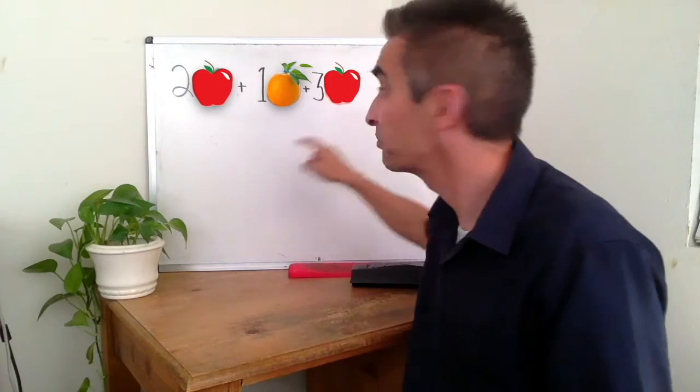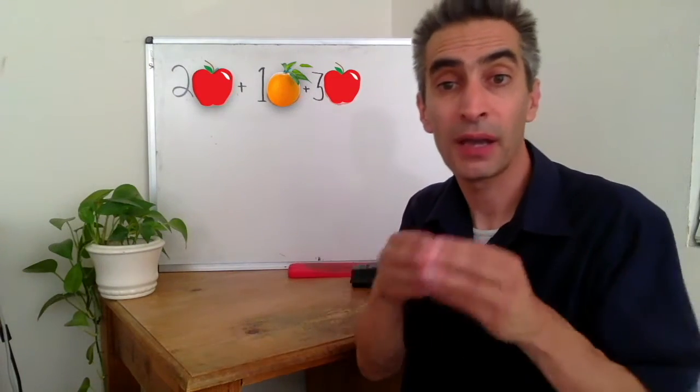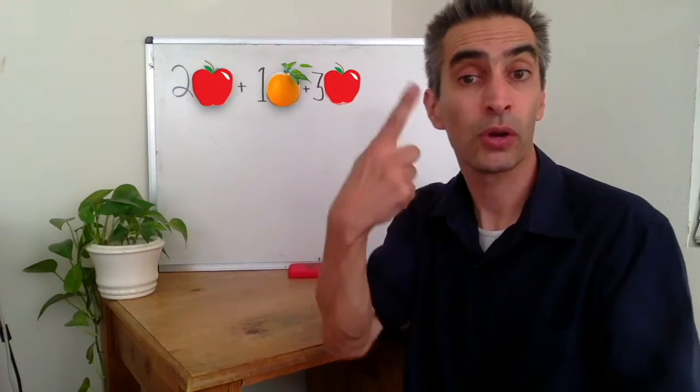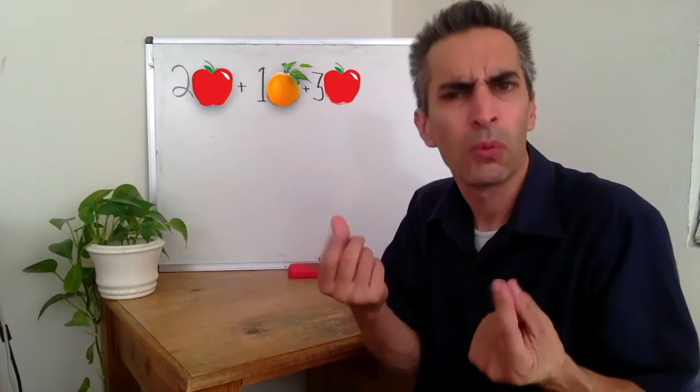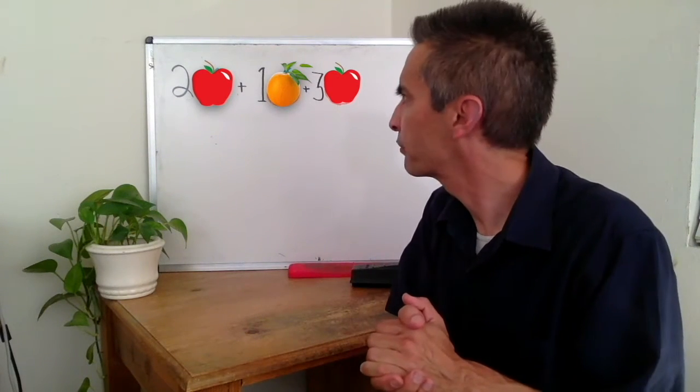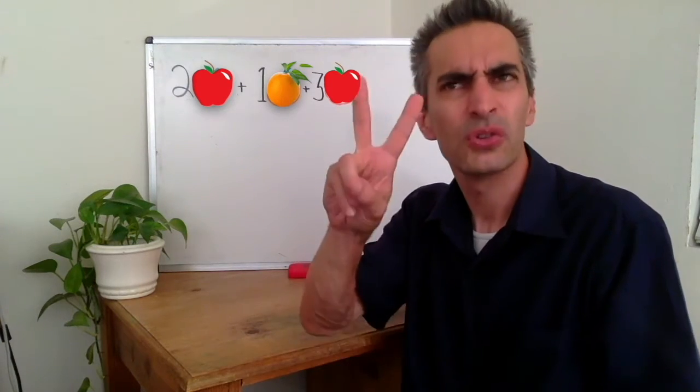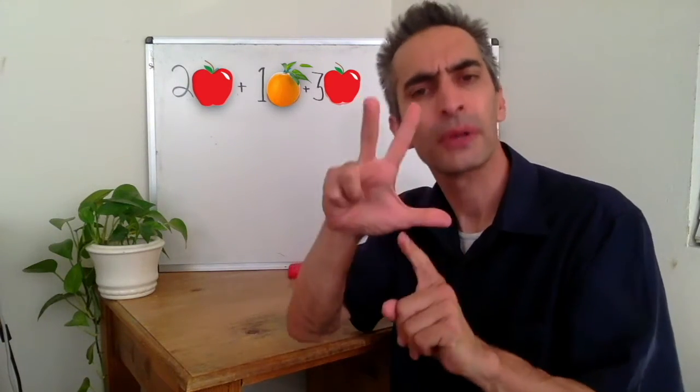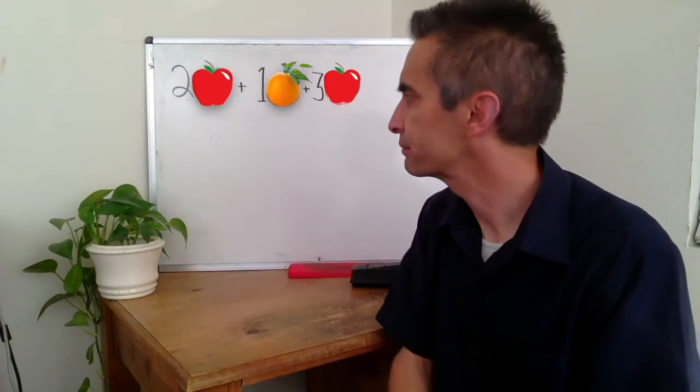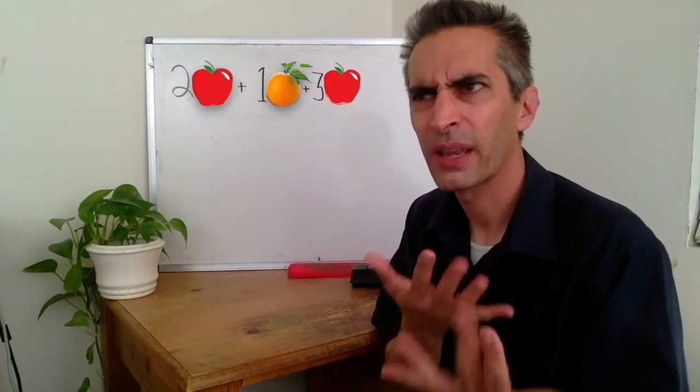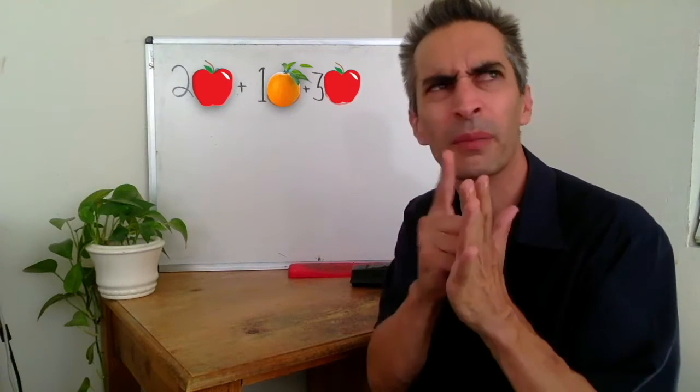We've got this math problem. We must add up 2 apples plus 1 orange plus 3 apples. What are we going to do? Let's think. 2 plus 1 plus 3 equals 6, right? 6 pieces of fruit, right? Wait a minute.